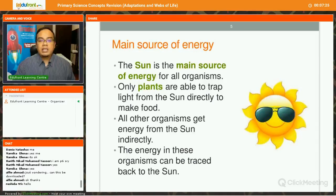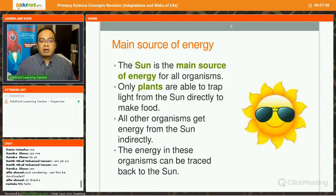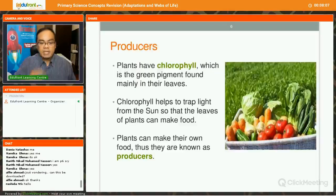The sun is our main source of energy. Without the sun, all plants and animals would not be able to live. So the sun is the main source of energy for all organisms. Only plants are able to trap light from the sun directly to make food. For humans and animals, we are not able to make food directly from the sun. But plants are able to make food on their own through the process of photosynthesis, by trapping the light energy from the sun. All other organisms get energy indirectly from the sun, and the energy of these organisms can be traced back to the sun.